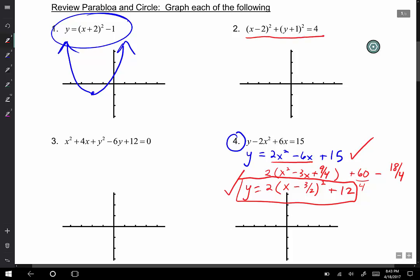The center you see is at (2, -1), so you plot your center at (2, -1). The radius is 2, so you just go up 2, left 2, down 2, right 2, and you make a nice circle.